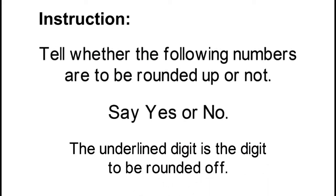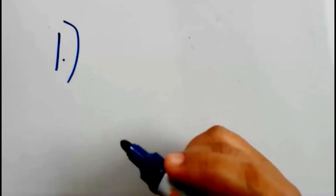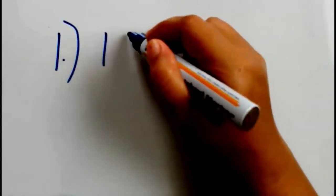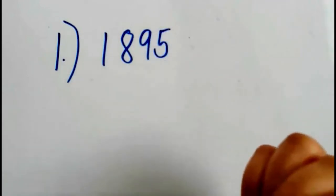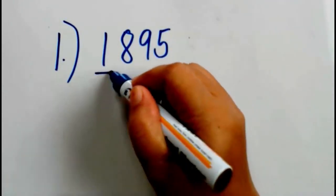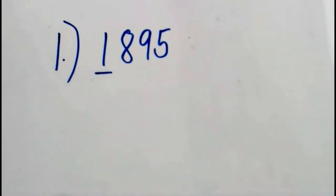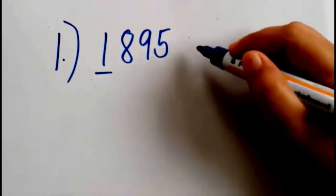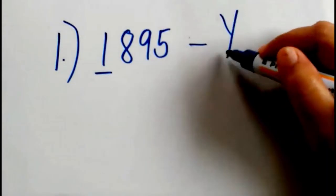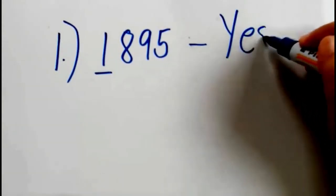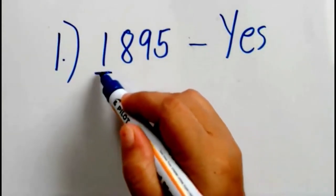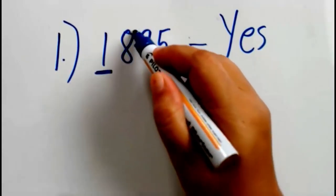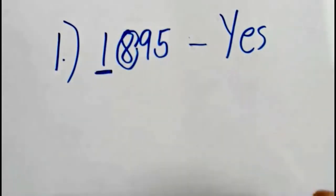Okay, this is our number 1. The number here is 1,895, and the underlined digit here is 1. What do you think? Are we going to round this up or no? You are correct — very good. The answer here is yes. Why? Because the number at the right side of 1 is 8.